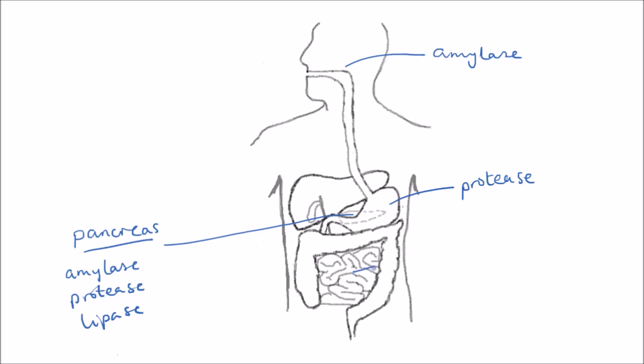The small intestine also produces all three types. So we have amylase, protease, and lipase as well. All three are produced in the small intestine. All three are produced in the pancreas. We have protease being produced in the stomach, and we have amylase in the salivary glands.